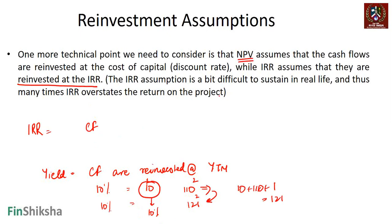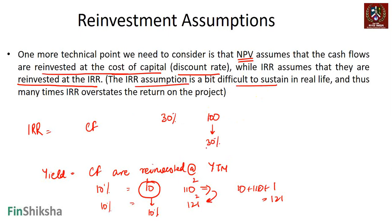When using NPV, you are discounting at the hurdle rate or cost of capital, so NPV assumes that cash flows are reinvested at the cost of capital or hurdle rate. In real life, the IRR reinvestment assumption is difficult to sustain. If the IRR is 30%, that does not mean a cash flow of ₹100 will get reinvested at 30% in real life — that's not possible most of the time.